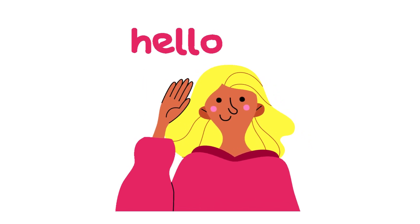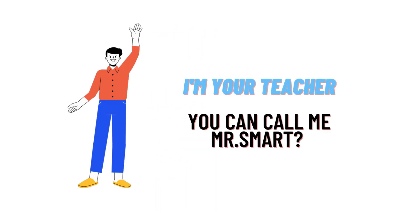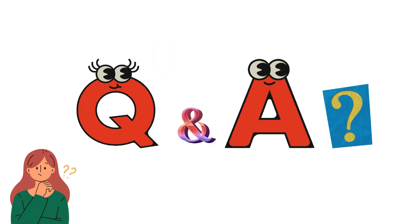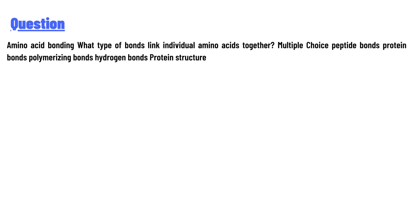Hello everyone, I am Akrash, your teacher. Welcome to classtritter.com. Our today's question is: what type of bonds link individual amino acids together? The multiple choice options are: peptide bonds, protein bonds, polymerizing bonds, hydrogen bonds, and protein structure.